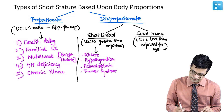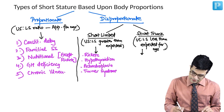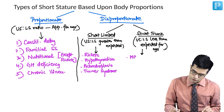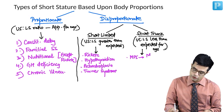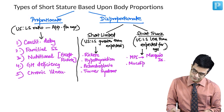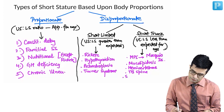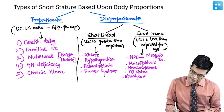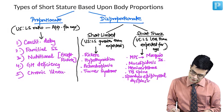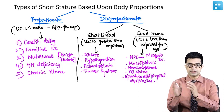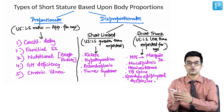Short-trunk short stature can be seen in mucopolysaccharidosis — there is a type called Morquio disease — and in mucolipidosis. It also occurs in vertebral anomalies like hemivertebrae, tuberculosis of the spine (caries spine), and in spondylo-epiphyseal dysplasias. These are the common causes of proportionate versus disproportionate, and among disproportionate, short-limbed versus short-trunk short stature.